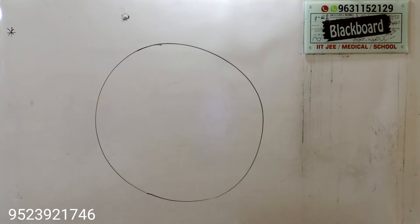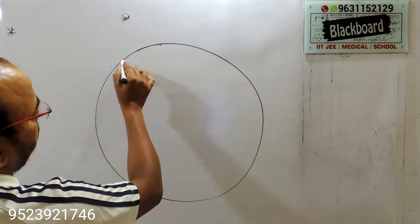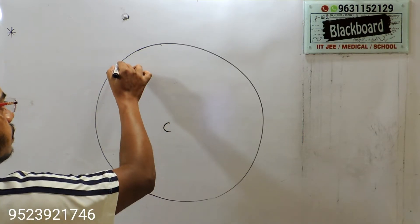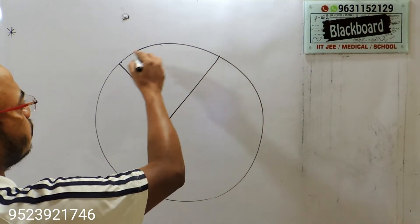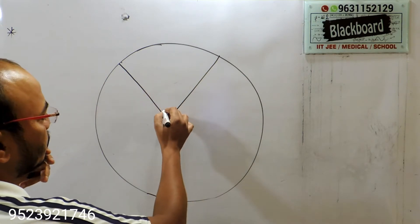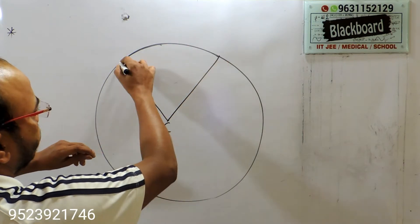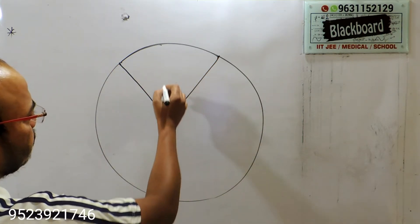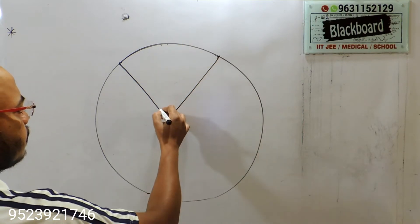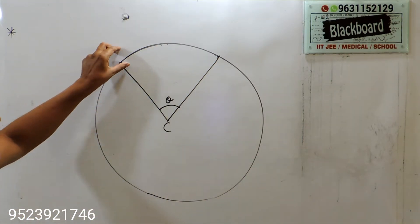Here we are going to derive the formula for a spherical part. This is your circle, this is the radius, and this is a sphere. What will be the surface area of this spherical part? The complete surface area of a sphere is 4πR², but here if the angle is theta, what will be the surface area for this section?